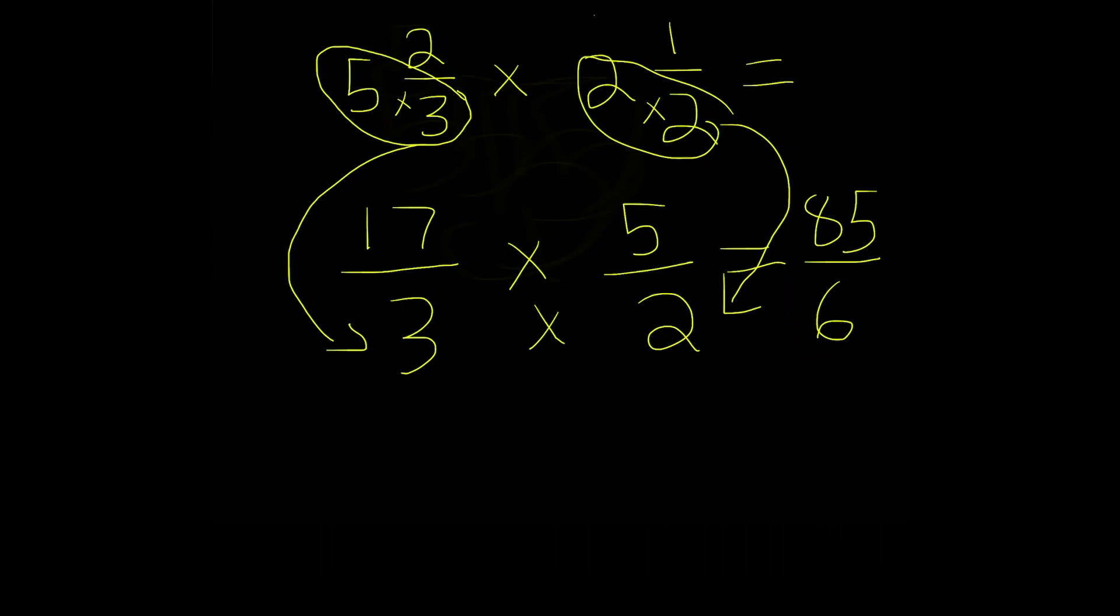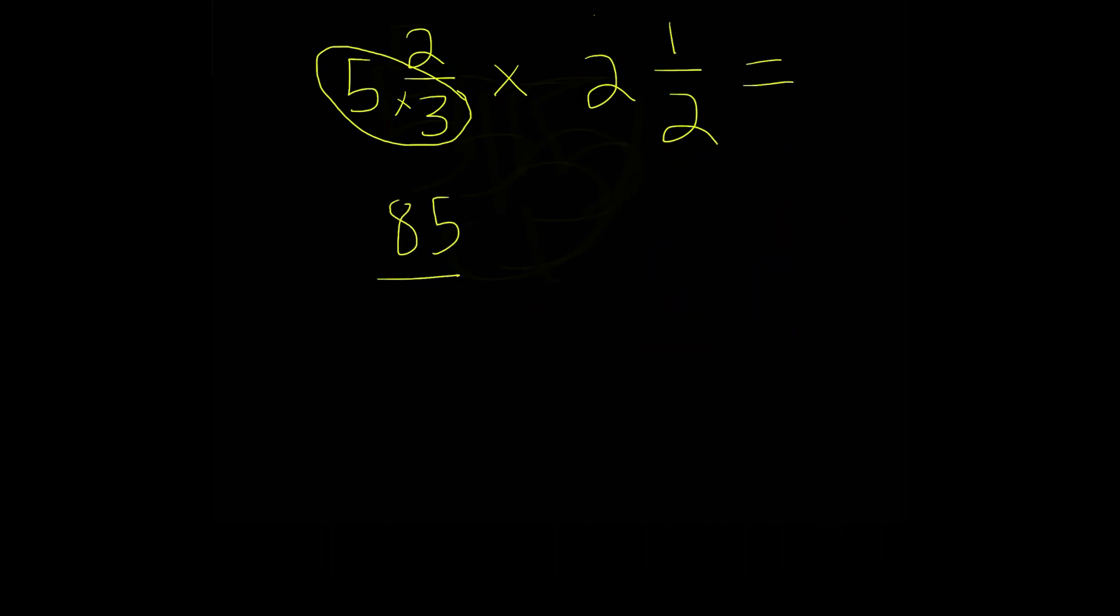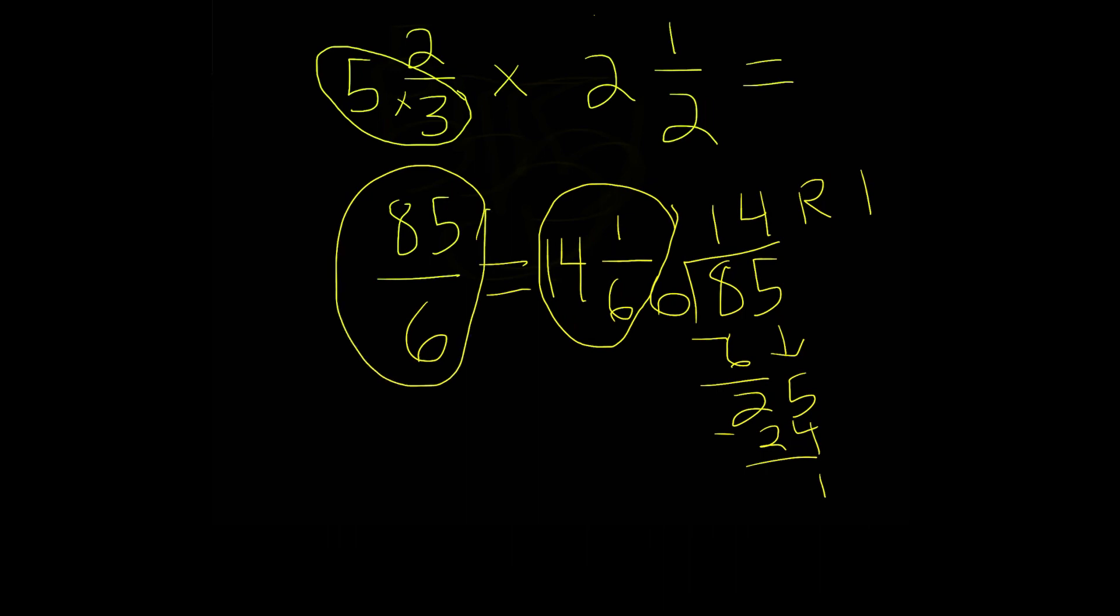Well we can actually convert this 85 over 6. Let's convert 85 over 6 into a mixed number. And our first step is to divide 85 and 6. Well 6 goes into 8 once. Let's bring down the 6 here. 2. Bring down the 5. 6 goes into 25 4 times. So this is 24 minus 1. So we have 14 with a remainder of 1. So our mixed number is going to be 14. Our numerator is going to be 1. And our denominator stays the same. So it's going to be 6. And this is our answer in mixed number form. So 14 and 1 sixth. And 85 over 6 is our answer in improper fraction form.